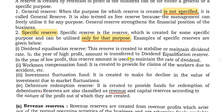Workman Compensation Fund is created to provide for claims of workers due to accidents. Investment Fluctuation Fund is a specific reserve created to make up for declining in the value of investments due to market fluctuations.